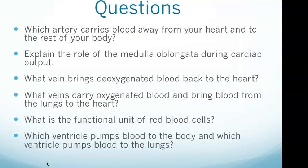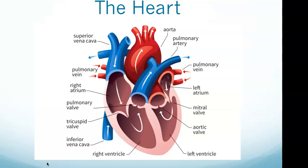The left ventricle pumps blood to the body and the right ventricle pumps blood to the lungs — that answers question six. The atria receive blood returning to the heart, while the ventricles collect and expel blood from the heart. The atrioventricular valves separate the atria and the ventricles: the tricuspid valve separates the right atrium and right ventricle, and the mitral valve separates the left atrium and left ventricle.